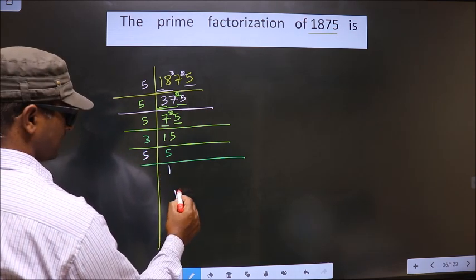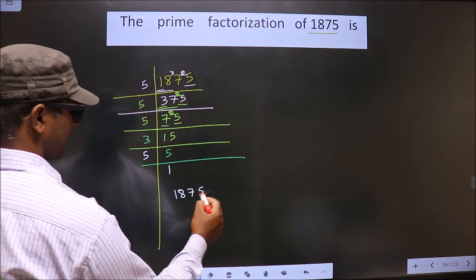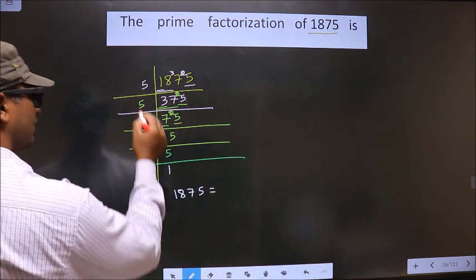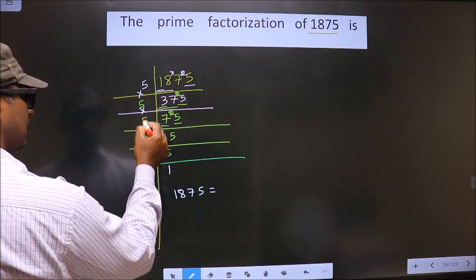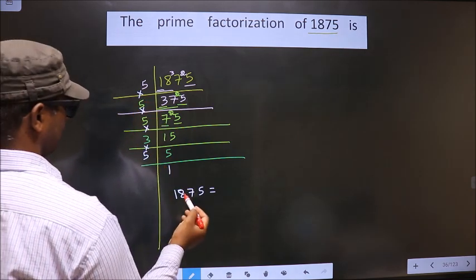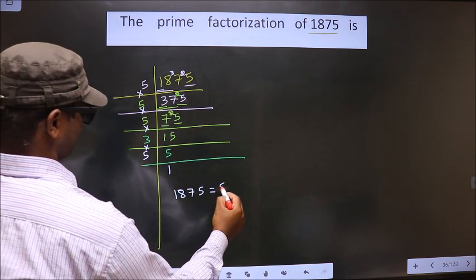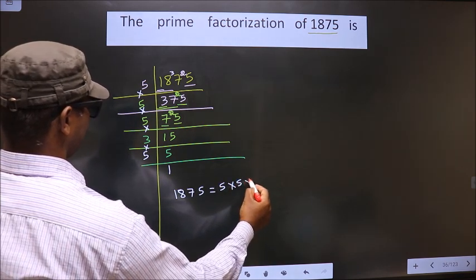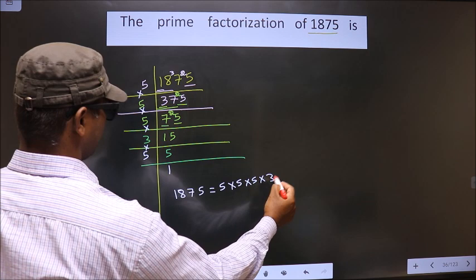So, prime factorization of 1875 is, you put into symbol between them. That is, 5 into 5 into 5 into 3 into 5.